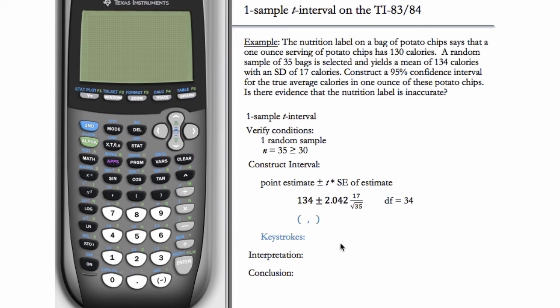To construct our confidence interval, we have our point estimate plus or minus T star times the SE of that estimate. Our point estimate is the sample average of 134. We can look on the formula sheet if we need to and the SE of the estimate is S over the square root of N. So S is the sample SD, which is 17. N is the sample size, which is 35. And we have 34 degrees of freedom. But the question is how do we get this T star here?